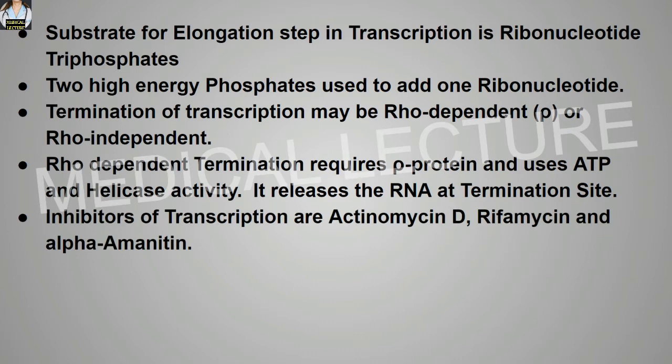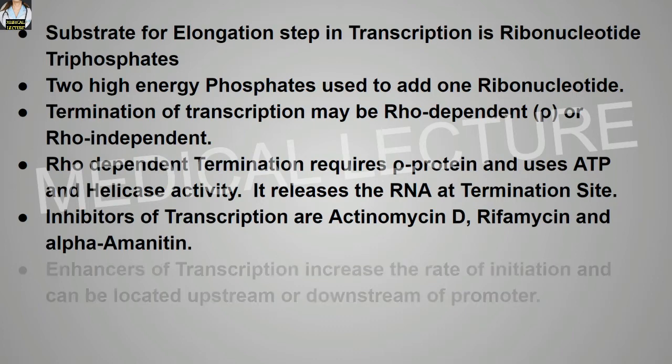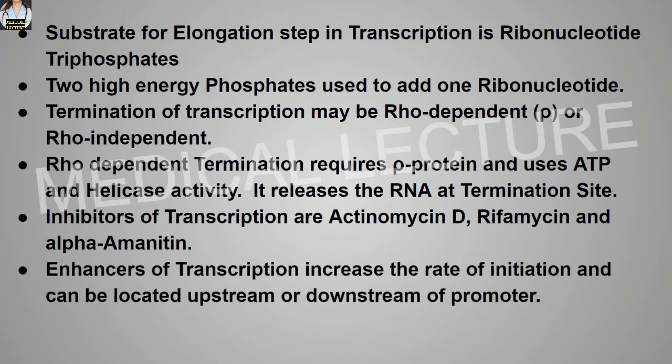The inhibitors of transcription are Actinomycin D, Rifamycin, and Alpha-Amanitin. The enhancer of transcription increases the rate of initiation and can be located upstream or downstream of the promoter.